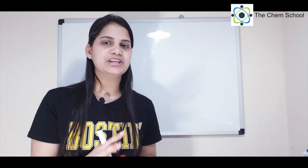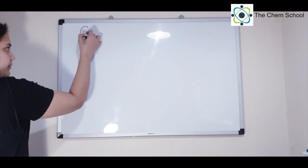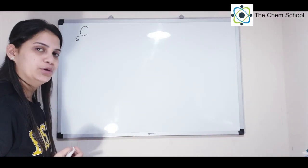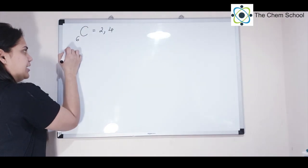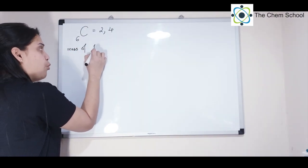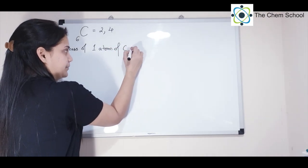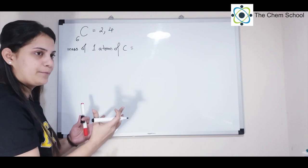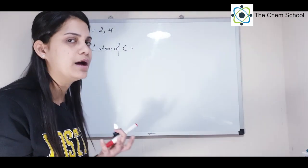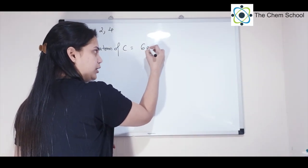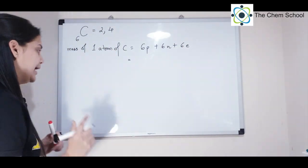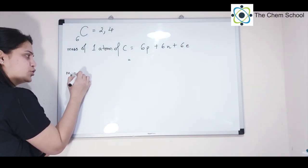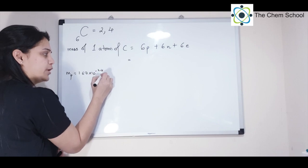One mole equals 6.022 × 10²³. Now let's talk about significance. Carbon has atomic number 6, so its electronic configuration is 2,4. If we talk about the mass of one atom of carbon, carbon has 6 protons, 6 neutrons, and 6 electrons. The mass of a proton is 1.67 × 10⁻²⁴ grams.